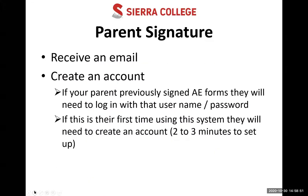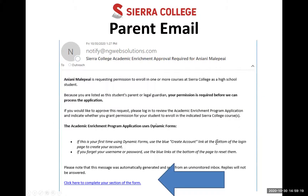What does your parent need to do? They'll receive an email and will need to create an account to sign the form. If your parent already has an account from a previous dual enrollment class, they'll just log in with their username and password. Otherwise, it will take them two to three minutes to create a new account. The email they receive will have 'Sierra College Academic Enrichment Approval' in the subject line, the sender will be NG Web Solutions, and there'll be a link at the bottom they need to click.